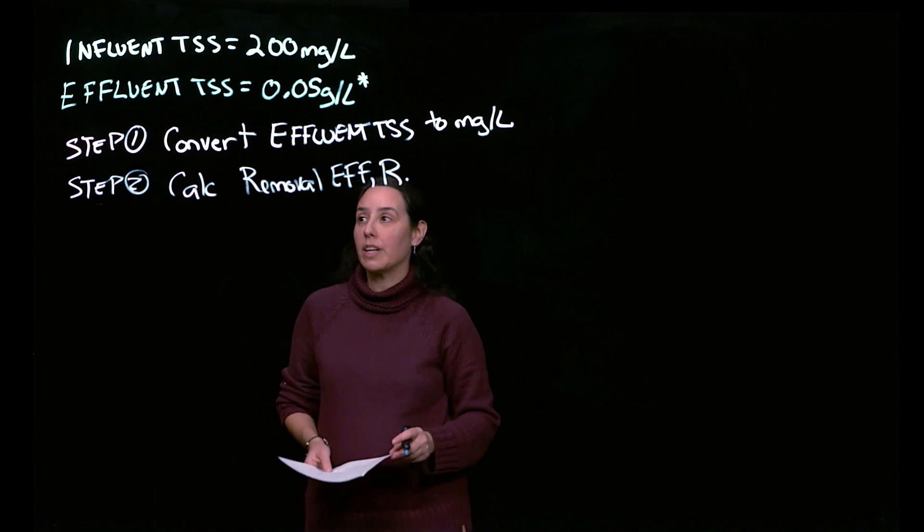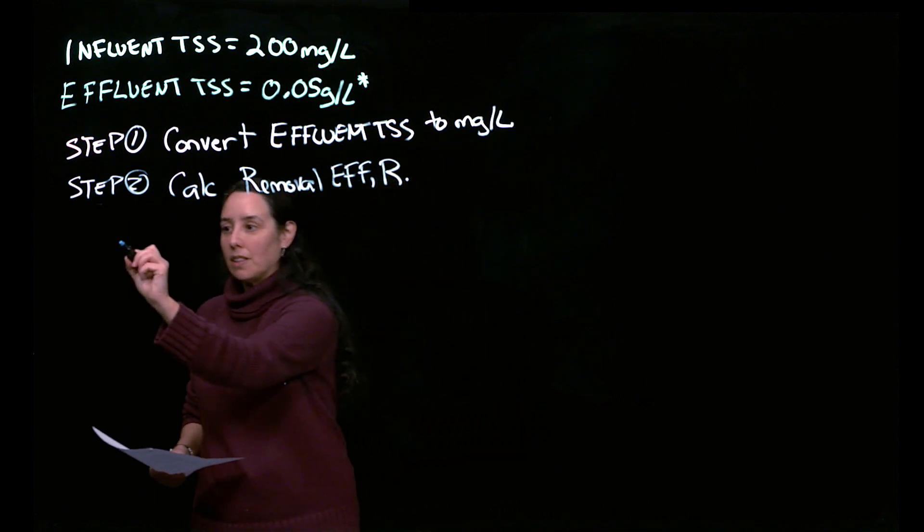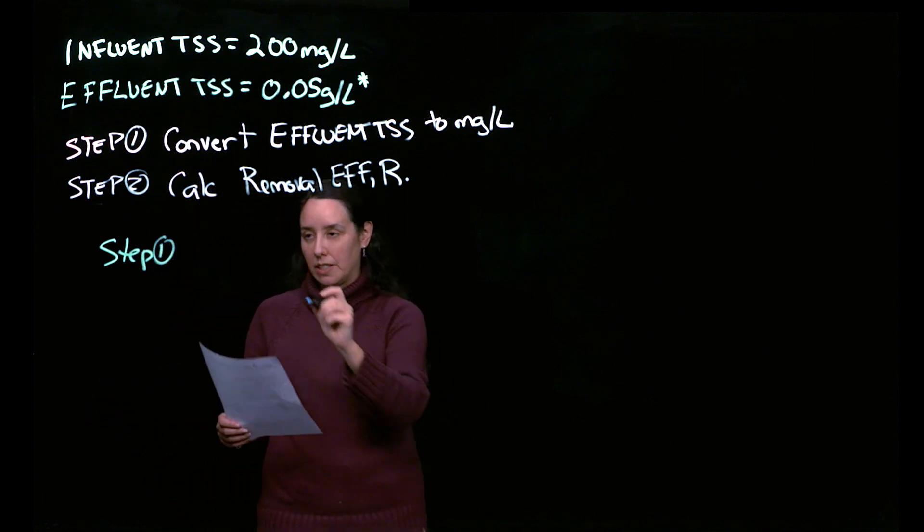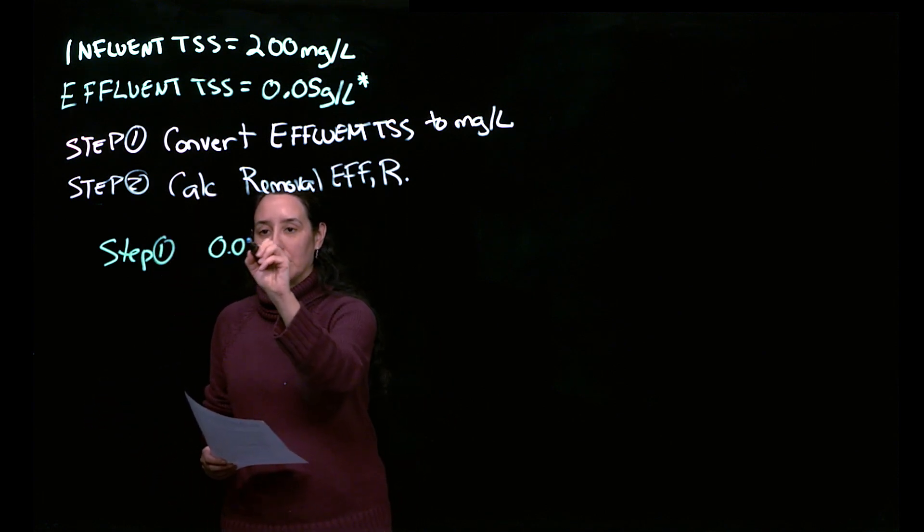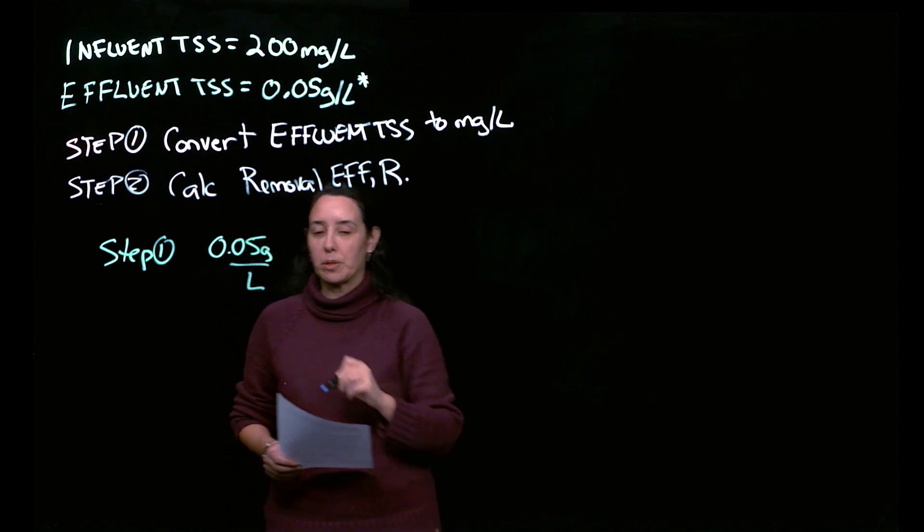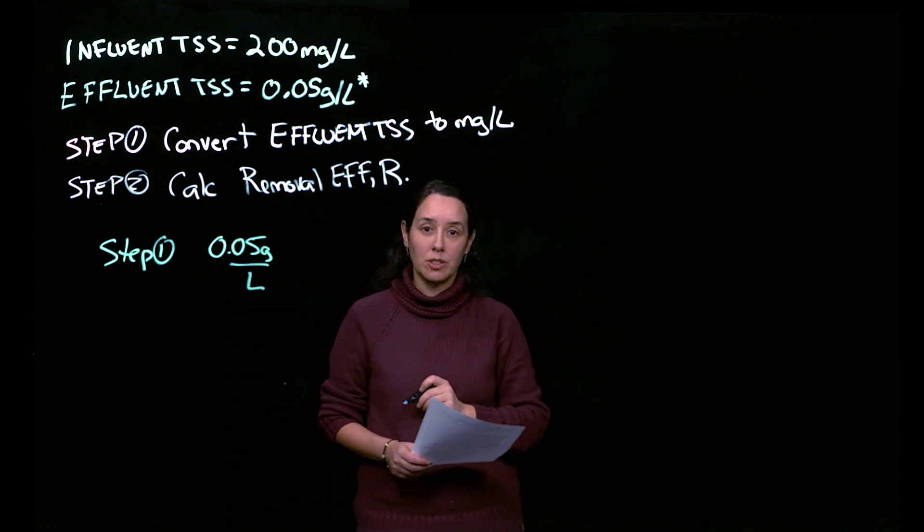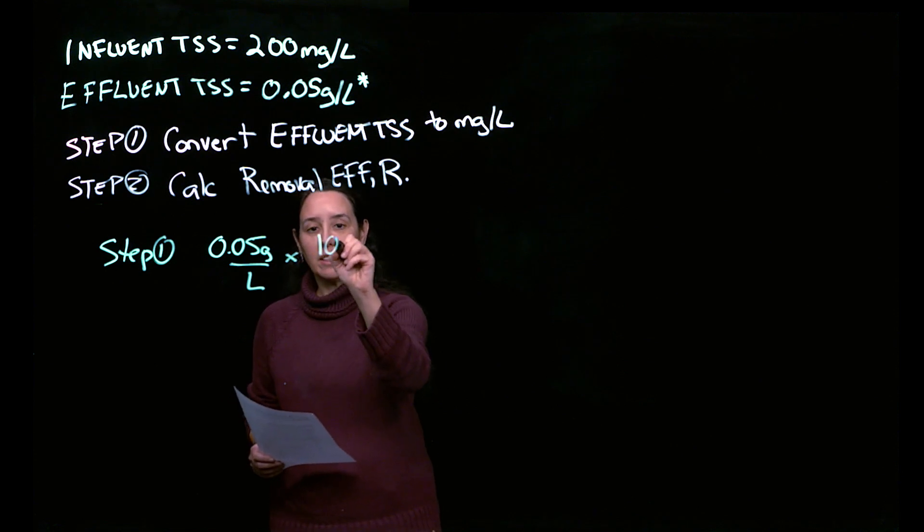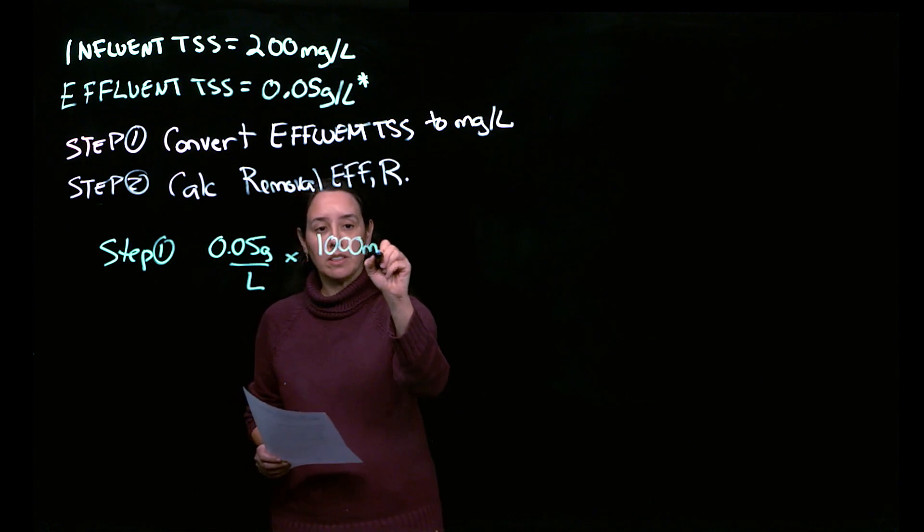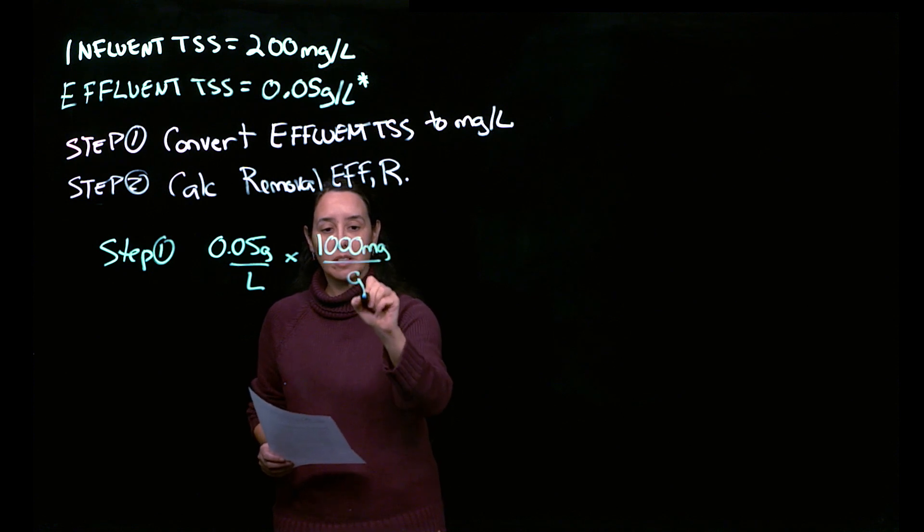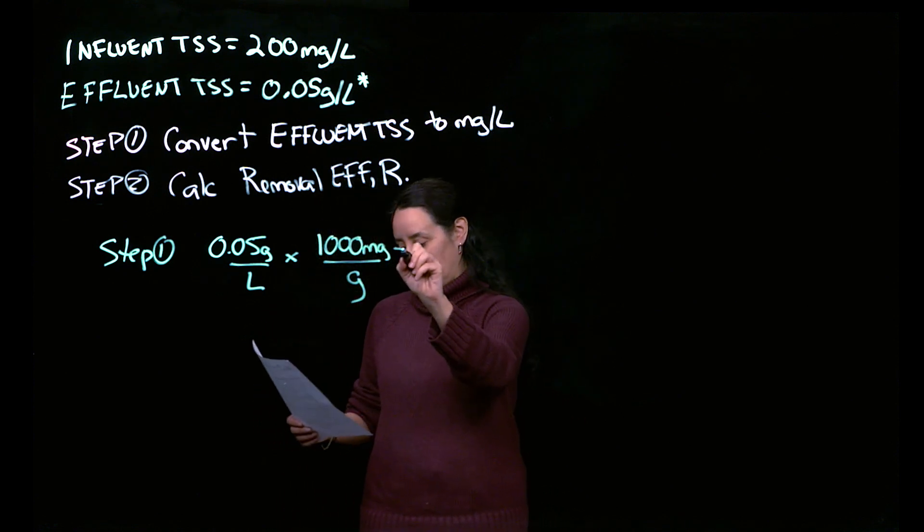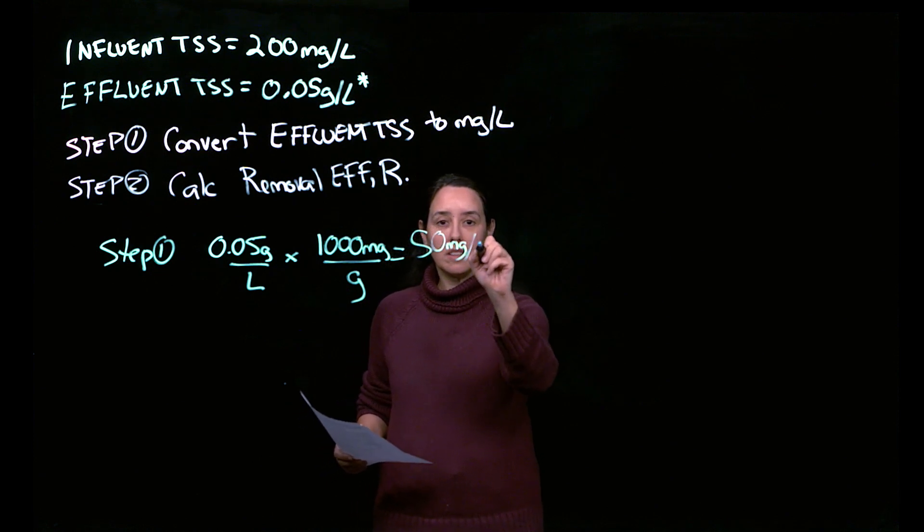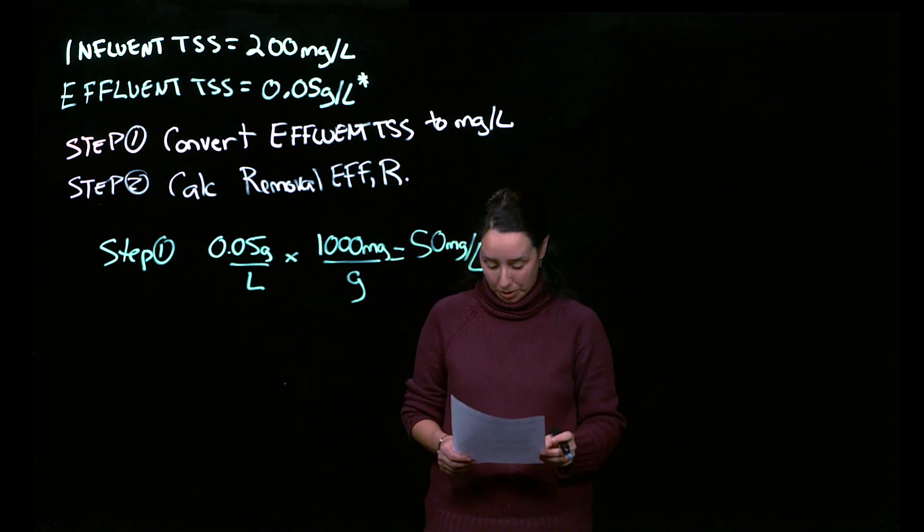So looking at step one, we have 0.05 grams per liter, and we want to convert it into milligrams per liter. So that is just 1,000 milligrams per gram, and that tells us that that is now 50 milligrams per liter.